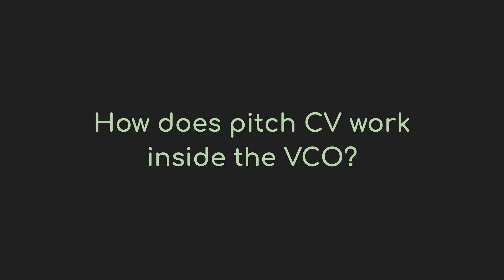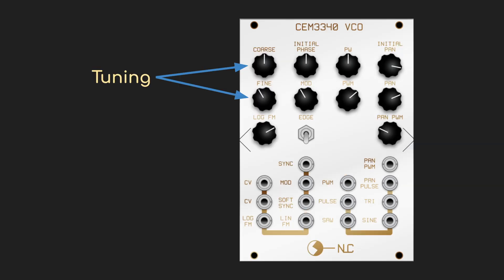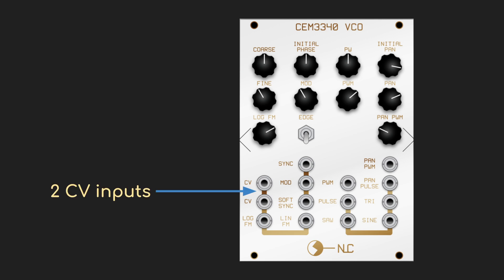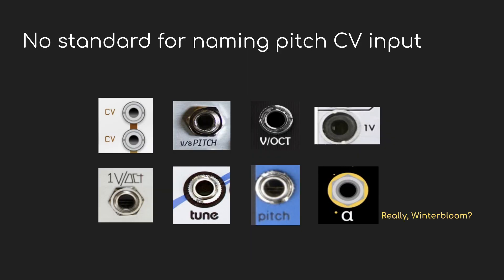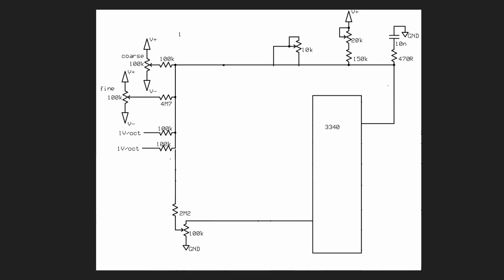Now just before I wrap up, I want to come back to show how one of the VCOs handles the incoming pitch CV. I'm going to use the old reliable CEM3340, because it's designed to basically just expose the functionality of the underlying chip — it can be really useful for illustrating this sort of thing. So let's take a look at the front panel. We've got the coarse and fine-tuning knobs, and then down here there are two different inputs labeled CV. When I first saw something like this, I had gotten used to seeing things labeled pitch or volt per octave — but more than that, there are two of them. Which one should I use? Does it matter? Why would I need two of them? A lot of these questions can be answered just by looking at the schematic, which Non-Linear Circuits so kindly makes available.